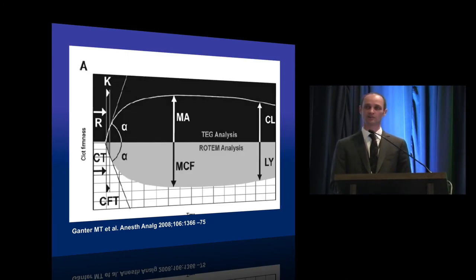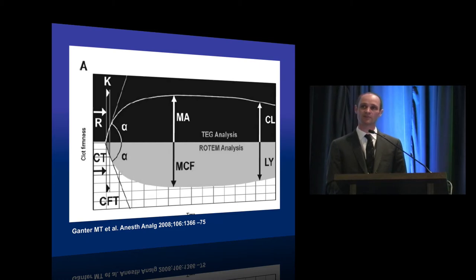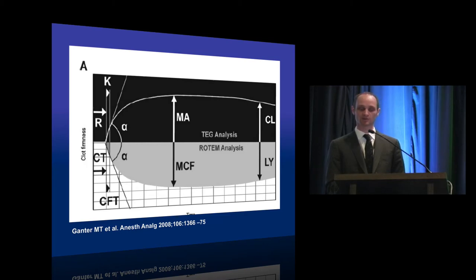The traces, when you stand back and look at them, appear quite similar. The nomenclature for nearly all the parameters differs between TEG and ROTEM, but essentially both devices provide very granular information about clot formation and clot lysis — including initiation of clot formation, the degree of fibrin polymerization, and clot strength influenced by platelets and fibrinogen. When assessing clot strength, TEG measures the maximum amplitude or MA, while ROTEM measures maximal clot firmness or MCF. Both can also produce information about clot lysis, labelled CL or LY with ROTEM.